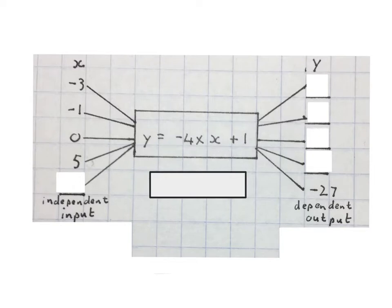In the box here we have the rule, or we can say it's an equation, or we can say it's a relationship between X and Y.